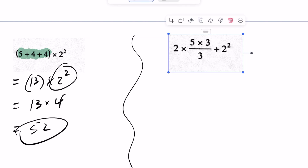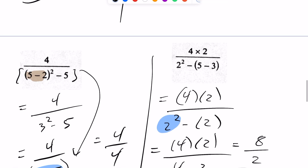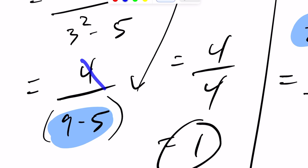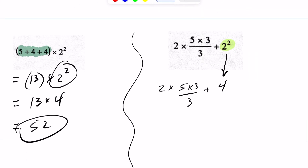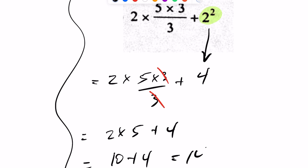For this last problem, I have no brackets in this expression. I do have exponents, so I'll rewrite this as 2 times 5 times 3 over 3, plus 2 squared becoming a 4. B — no brackets; E — exponents done; then division. Because the terms are separated by multiplication rather than addition or subtraction, the 3s cancel off, and this reduces to just 2 times 5 plus 4. Applying BEDMAS: 10 plus 4 gives us 14.